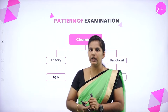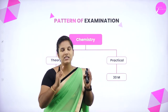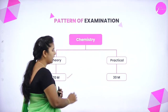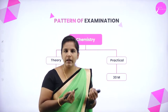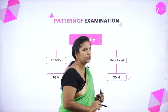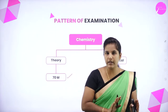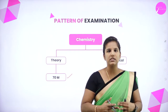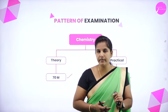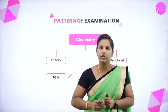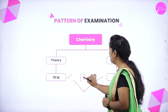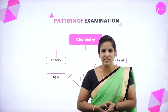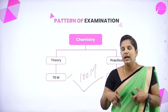In your pre-university journey, you are going to write chemistry as a separate paper. You will write theory for 70 marks and the remaining 30 marks is for practical. Up to 10th standard you read chemistry as part of science, but here in pre-university you write chemistry as a whole subject for 100 marks — 70 for theory and 30 for practical. It is very easy to score full marks.